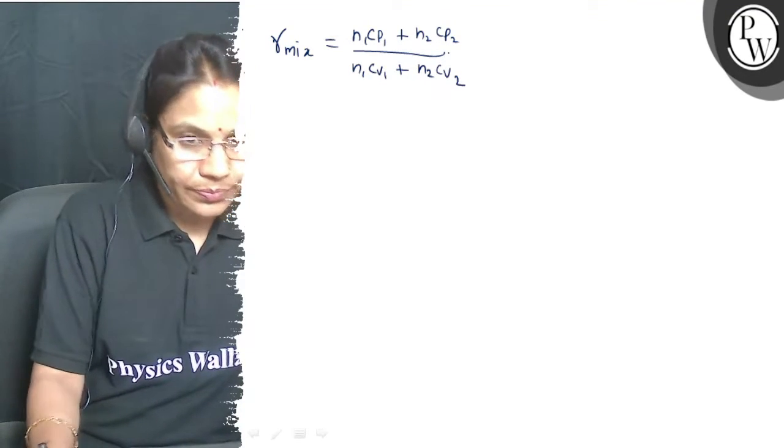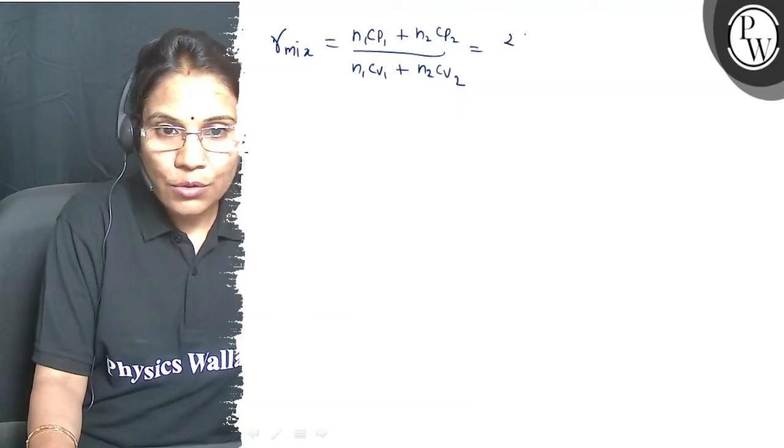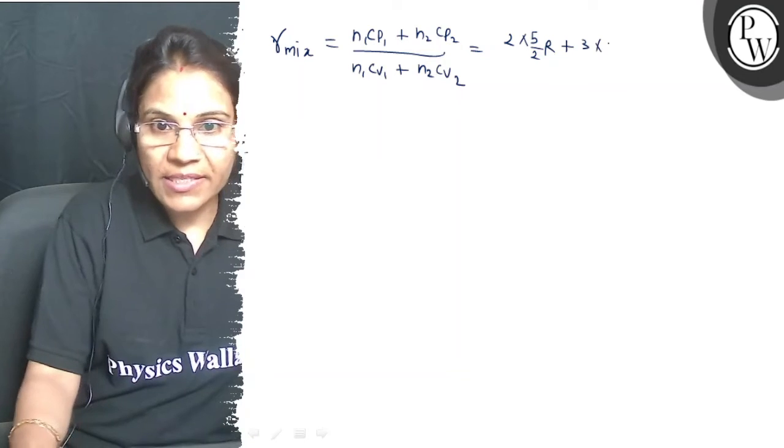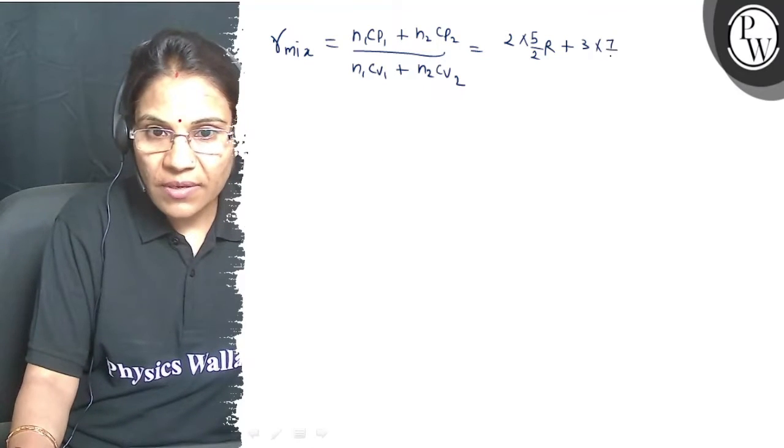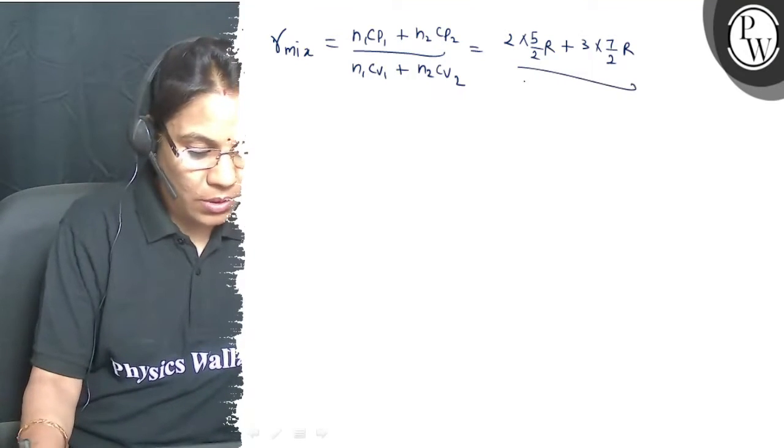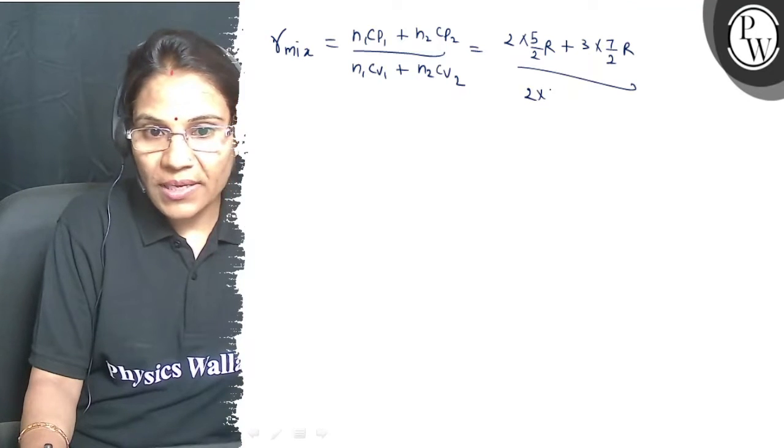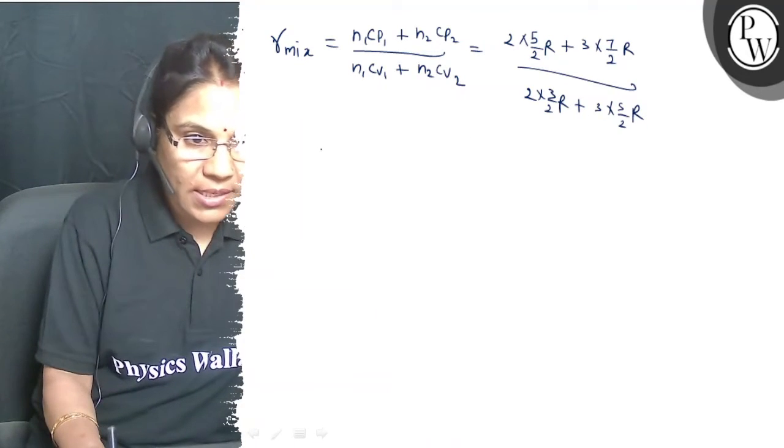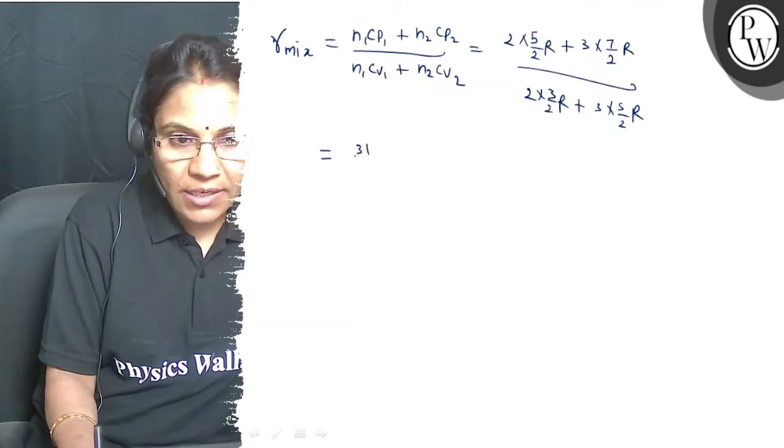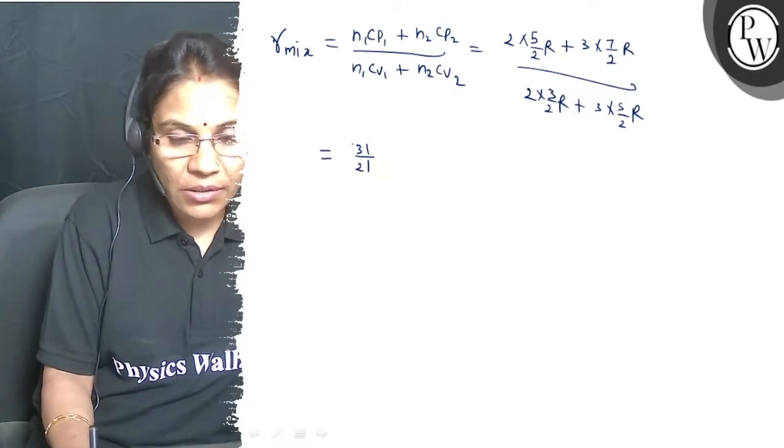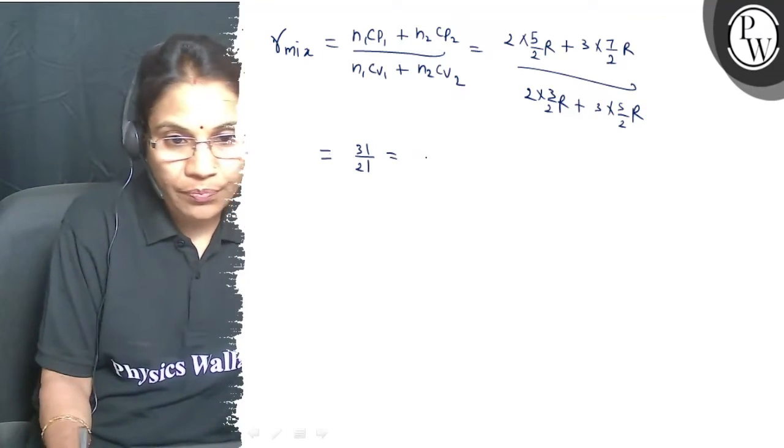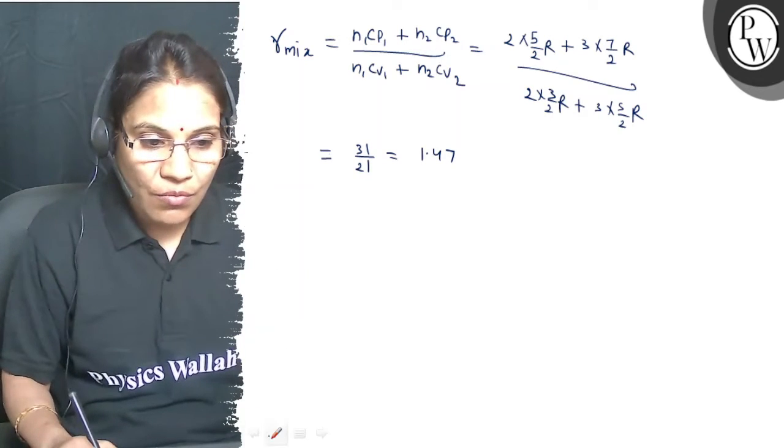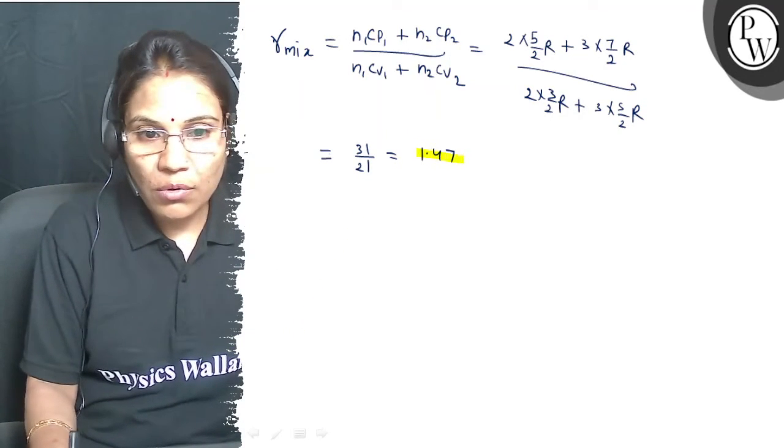n1 is 2, cp1 value is 5/2 R plus n2 is 3 and cp value for this is 7/2 R upon 2 into cv value for monoatomic gas is 3/2 R plus 3 into cv for diatomic 5/2 R. So, gamma value of mixture is 1.47.